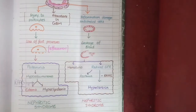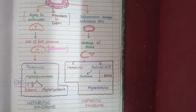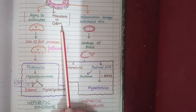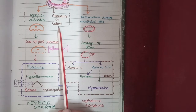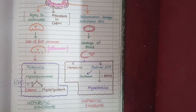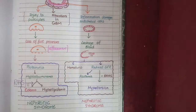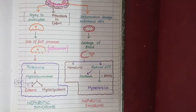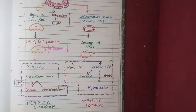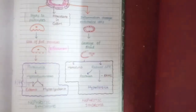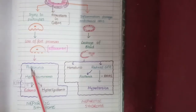Alternatively, protein leakage can result from structural or physiochemical alterations in the glomerular basement membrane. For example, in diabetes the glomerular basement membrane can be altered by glycosylation, which can also cause leakage of proteins.